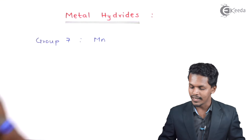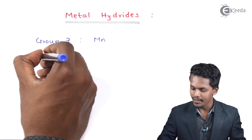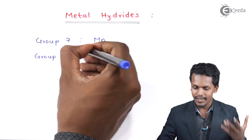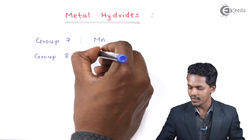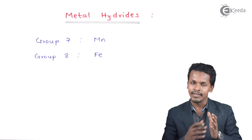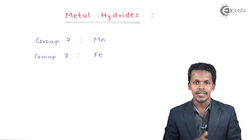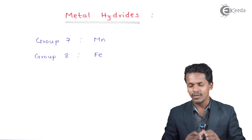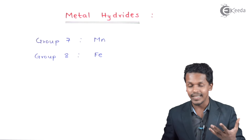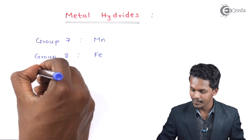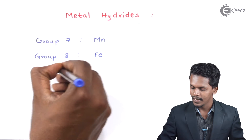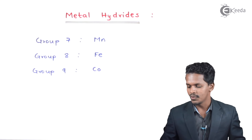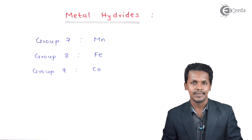Talking about another group, Group 8 — this consists of iron as the first element, and the other elements belonging to this group will not form any kind of hydrates. Similarly, Group 9, which includes cobalt, also does not form hydrates.